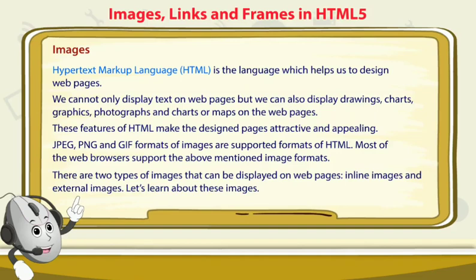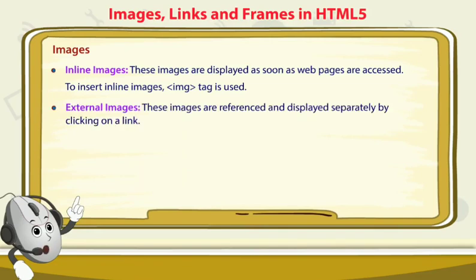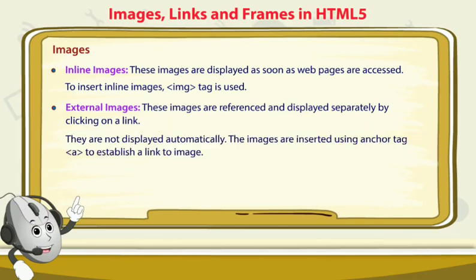Inline images are displayed as soon as web pages are accessed. To insert inline images we use the IMG tag inside triangle brackets — IMG means image tag. External images are referenced and displayed separately by clicking on a link. They are not displayed automatically; instead, the images are inserted using the anchor tag to establish the linking.